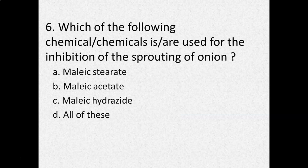Question number 6: Which of the following chemical or chemicals are used for the inhibition of the sprouting of onions? Options are: Maleic stearate, Maleic acetate, Maleic hydrazide, or All of these? And the answer is Maleic hydrazide.